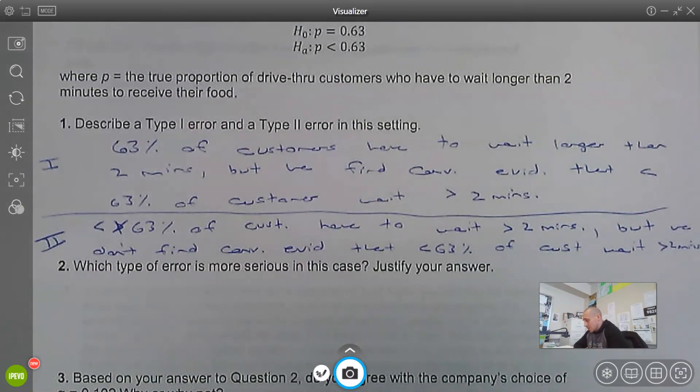So which error is more serious? Justify your response. I would say, let's think through this. In scenario 1 or Type 1, we think we're making the problem better, but in fact we're not. So customers are still having to wait, but we think it's better, so we don't do anything about it. In scenario 2, it got better but we didn't think it did, so we continue to try to make the wait time better. To me, scenario 1 seems worse.